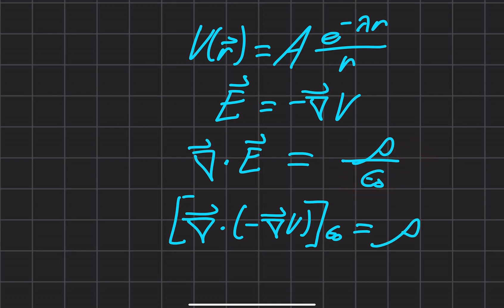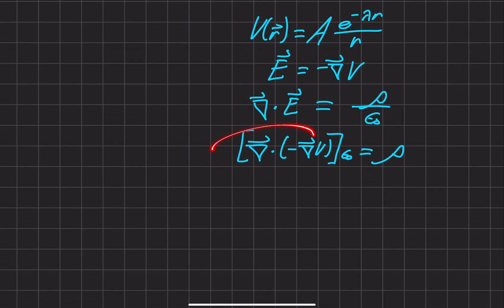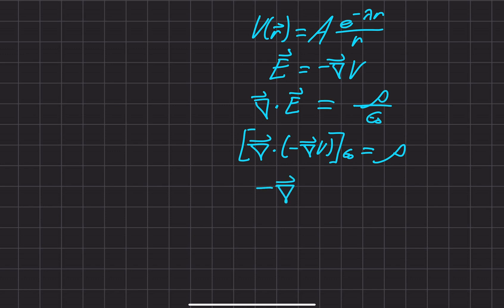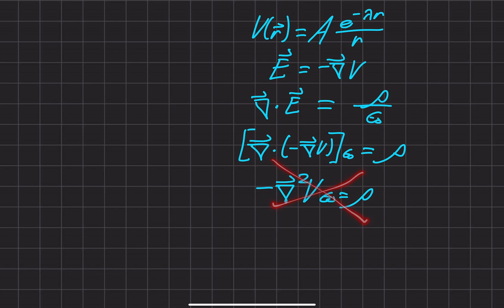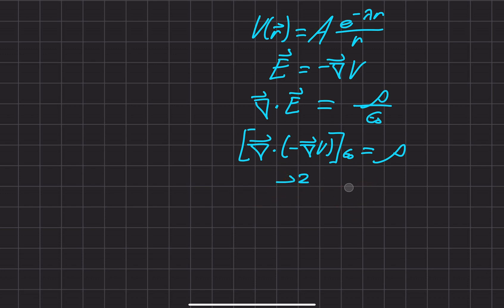Some of you who are clever will notice that this is actually an identity for the del operator — this whole thing would actually be equal to the negative Laplacian of the potential times epsilon naught. But that actually ends up being incorrect — do not do that. The reason is that by using that identity you end up skipping past some steps. There's a Dirac delta function hidden in there, and this will lead you astray if you're not careful.